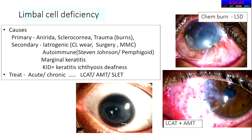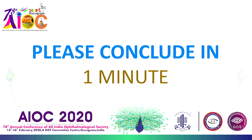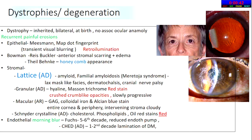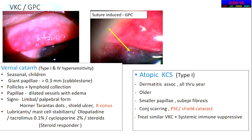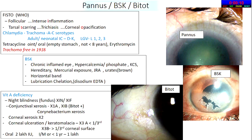Limbal cell deficiency is a very common case — a quiet case. Know all the classification of management, primary and secondary. It can be a case in itself combined with a corneal case. Know types of chemical burns and classifications — the Roper-Hall or Hughe's classification — and the staging. For dystrophies and degenerations — a common scenario — do retroillumination. Granular, lattice, or macular dystrophy can appear; mostly stromal dystrophies. For VKC (vernal keratoconjunctivitis) in children, know the difference between VKC and atopy.